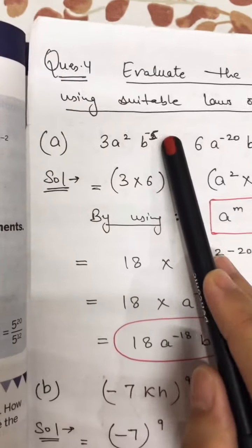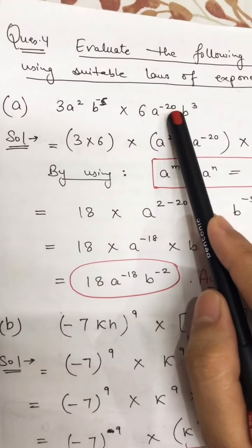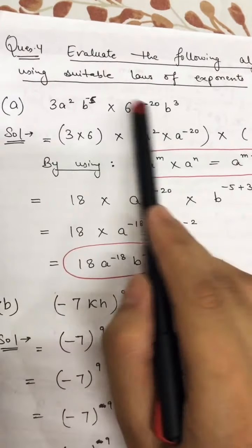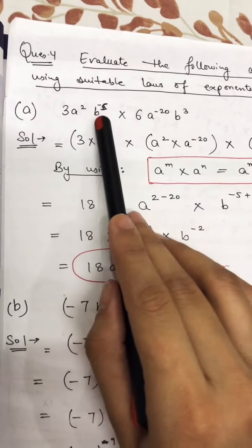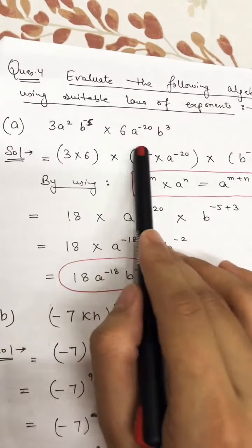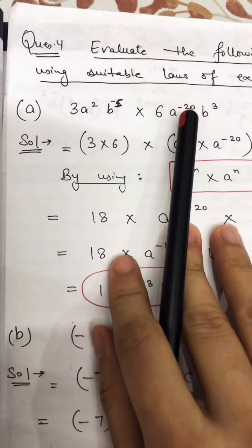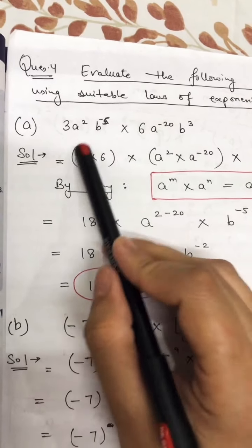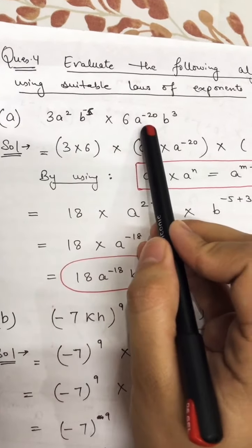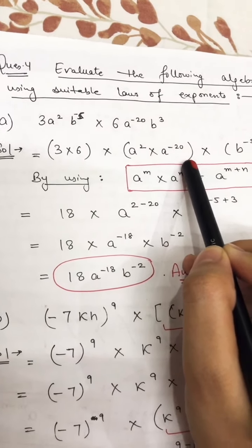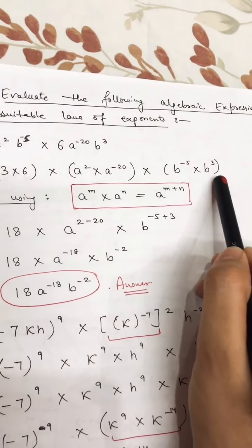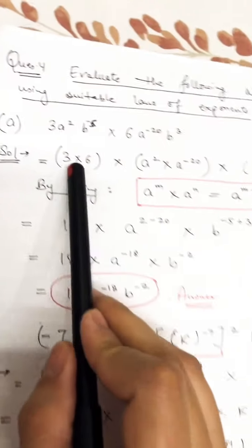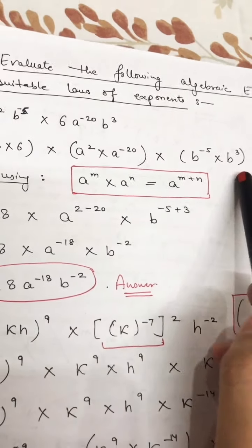Question 4 part A is: 3 a squared b raised to power minus 5, multiplied by 6 a raised to power minus 20 b raised to power 3. Check the statement for constants and variables. Write constants in one bracket and same variables together. So constants 3 and 6 go in one bracket, a and a in one bracket, and b and b in another bracket, with multiplication signs in between.